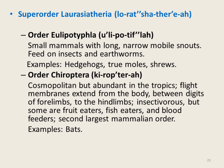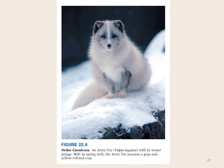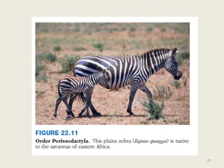The third superorder of infraclass Eutheria is Laurasiatheria, further classified into six orders. The first is order Eulipotyphla, which includes hedgehogs, true moles, and shrews. The second is order Chiroptera, which includes bats. The third is order Carnivora, which includes bears, dogs, raccoons, cats, seals, and otters. The fourth order is Perissodactyla, which includes odd-toed ungulates such as horses and zebras. The fifth order is Artiodactyla, which includes even-toed ungulates such as pigs, hippopotamuses, antelope, deer, and giraffes.